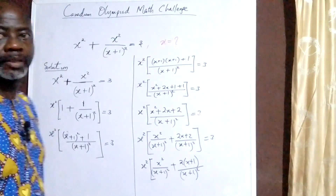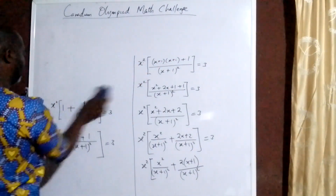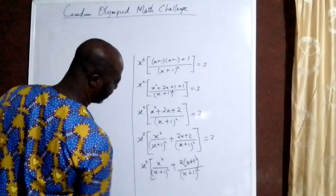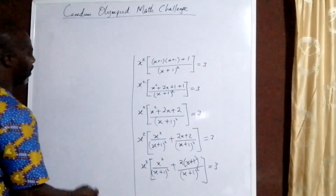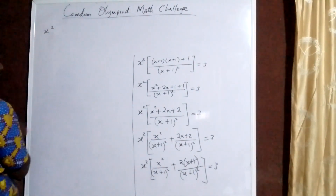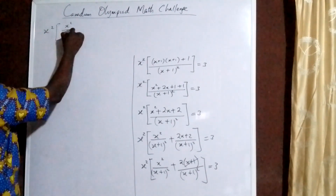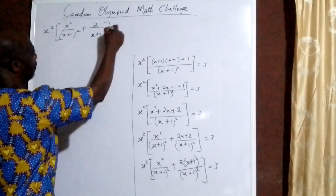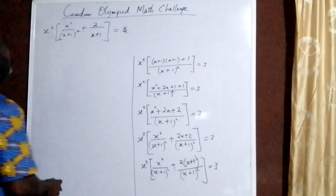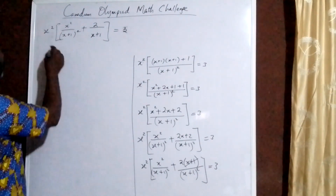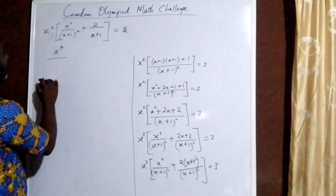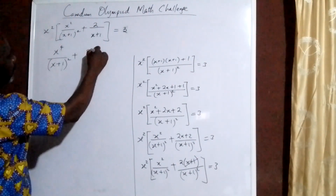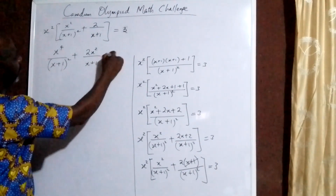From that, we cancel out one of the (x+1)'s in the second term. So we have x squared times [x squared over (x+1) squared plus 2 over (x+1)], equal to 3. Opening up the brackets: x squared times x squared gives x to the fourth over (x+1) squared, plus x squared multiplied by 2 gives 2x squared over (x+1), equal to 3.